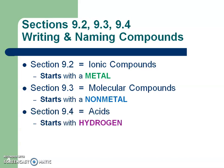The last type, in Section 9.4, you're going to learn how to write and name acids. Acids always start with hydrogen. So once you see hydrogen starting a compound, you'll recognize it as an acid, and you'll know how to write or name it.